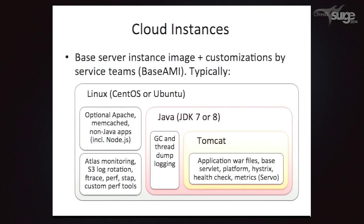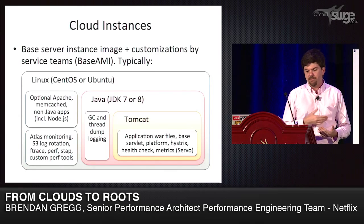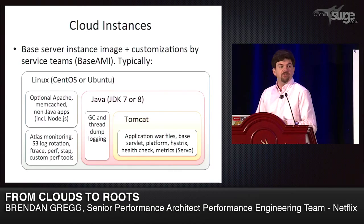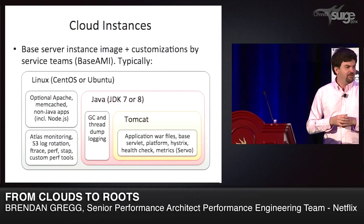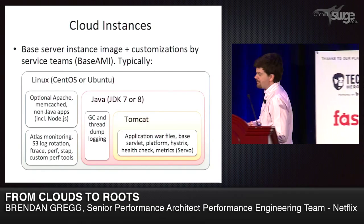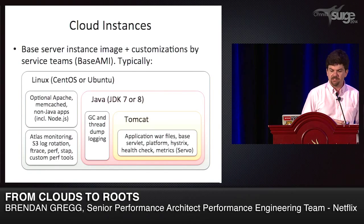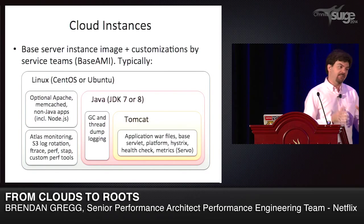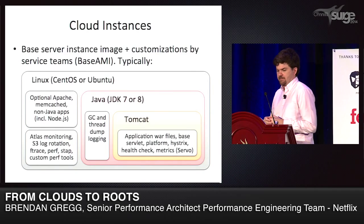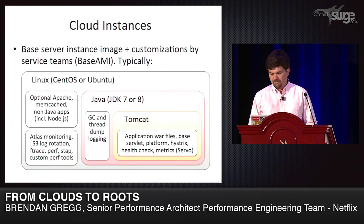The actual cloud instances have a base AMI — Linux, CentOS or Ubuntu — which may include optional Apache web server and Memcached. One service team decided to run Node.js because of freedom and responsibility, so I'm doing some Node.js performance debugging on Linux as well. We have our own monitoring tool called Atlas. Instances also have various performance tools we've been developing. Java is what many service teams use, deployed via Tomcat, with various Netflix libraries, APIs, and custom metrics coming out of the server.